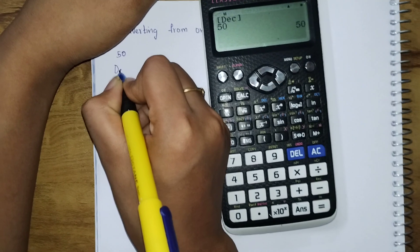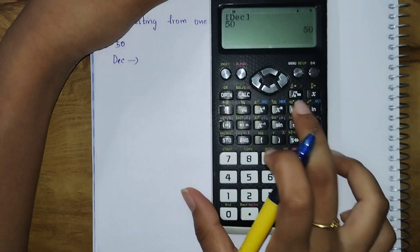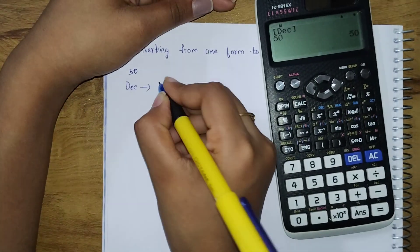50 is a decimal number, now we are converting it to hexadecimal.